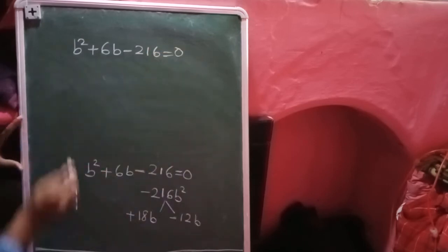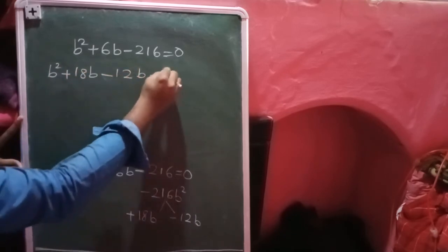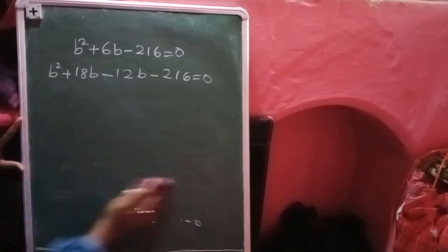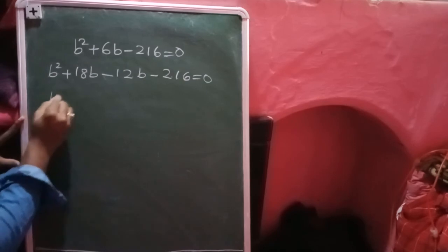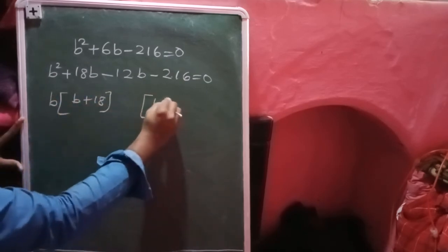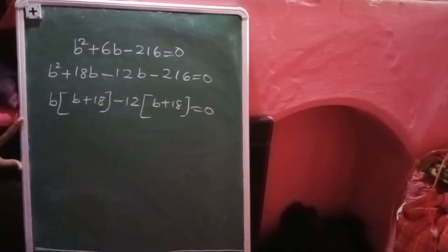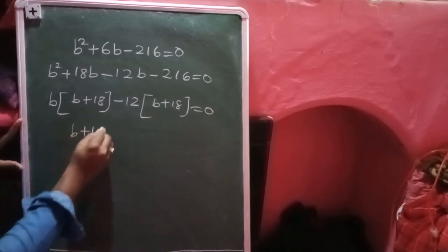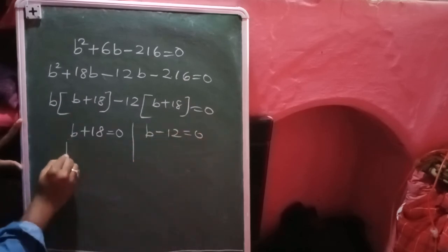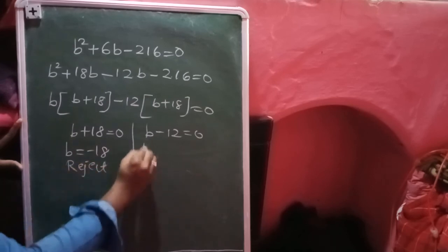Substituting into the equation: b² + 18b - 12b - 216 = 0. Taking b common from the first two terms: b(b + 18), and then -12 common from the last two terms: -12(b + 18) = 0. So (b + 18)(b - 12) = 0, giving b = -18 or b = 12.